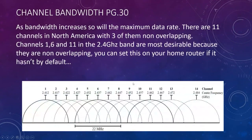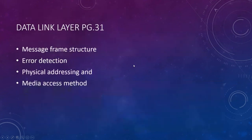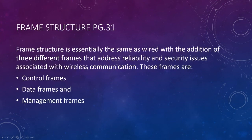That was the wireless physical layer — not much in it because there is no wire, so no connectors. For the wireless Ethernet data link layer, we have the same elements as wired — frames, error detection, addressing, and media access method — with the addition of three frame types addressing reliability and security: control frames, data frames, and management frames. The wireless 802.11 standard uses 11 frames total.